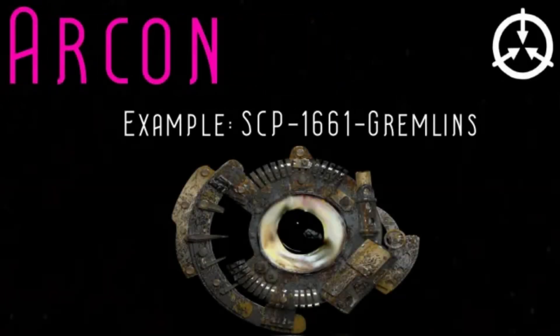Archon class SCPs are anomalies that could theoretically be contained, but are best left uncontained for some reason. Archon class SCPs may be a part of a conscious reality that is difficult to fully contain, or may have adverse effects if put into containment. These SCPs are not uncontainable — the defining feature of the class is that the Foundation willingly chooses not to contain these anomalies.